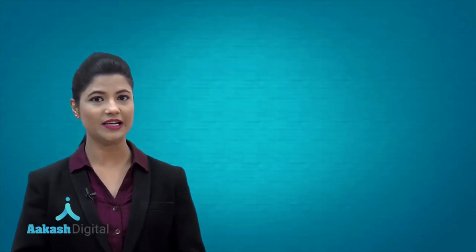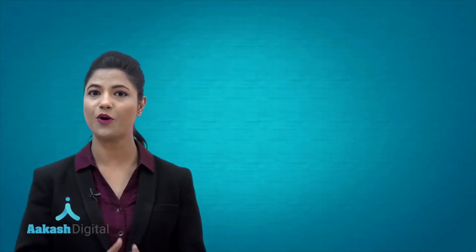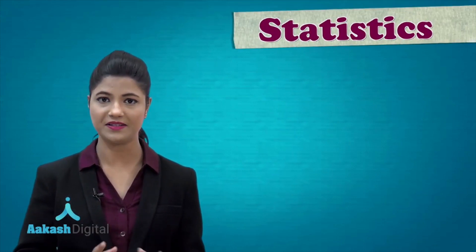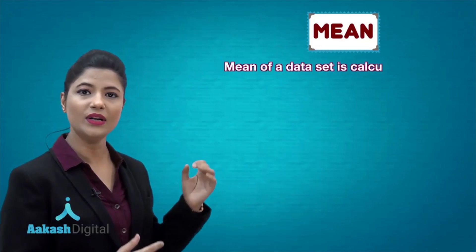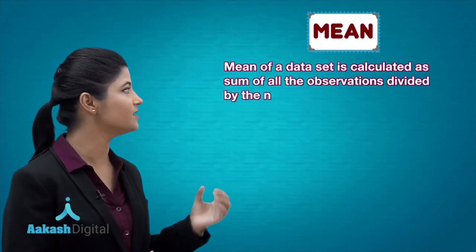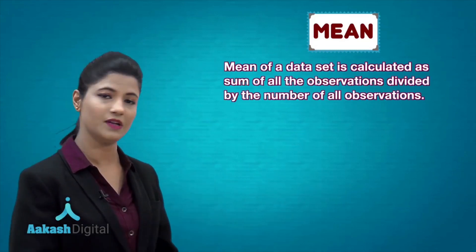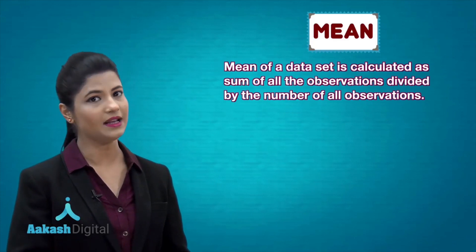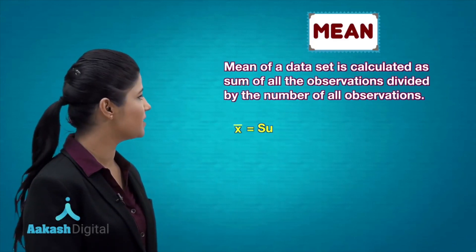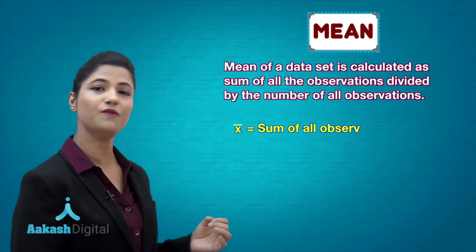Hi everyone, let's quickly recall the key points of today's lecture. In today's lecture you have started the chapter of statistics, where you have learnt about mean. Mean is calculated as the sum of all observations divided by the number of all observations, and it is denoted by the symbol x̄, where x̄ = sum of all observations upon number of all observations.